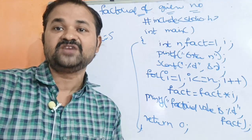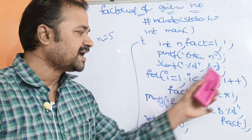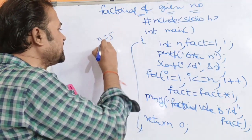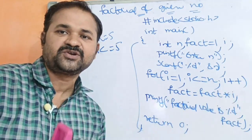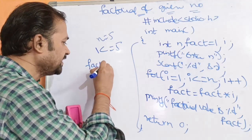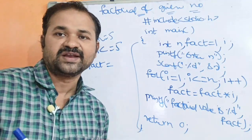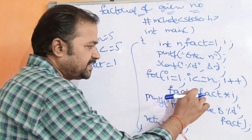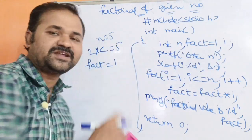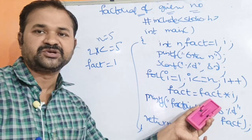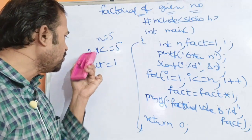i is equal to 1. i less than or equal to n - 1 is less than or equal to 5 - condition is true, so body execute avuthundi. fact is equal to fact into i - initial fact value 1, i value 1 - 1 into 1 anta 1. Fact lo 1 hundi. Next i plus plus, i lo ikhi 2 avuthundi. 2 is less than or equal to 5 - condition true. fact is equal to fact into i - fact is 1, i is 2 - result is 2.